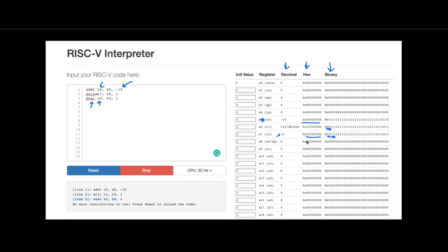So majority of the time, when you're dividing, you're most likely going to be using the shift-right arithmetic-immediate.